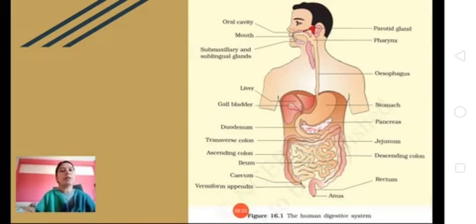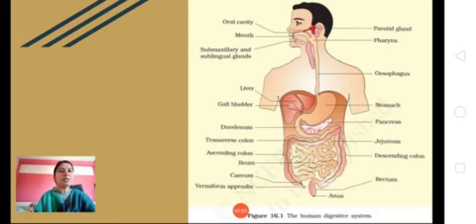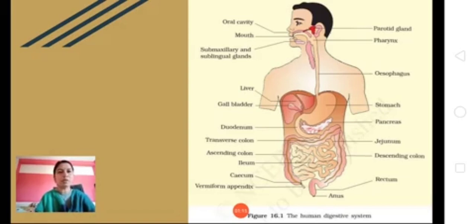The digestive system begins with the mouth. Inside the mouth there is an oral cavity, also termed as buccal cavity, and inside the buccal cavity we have the salivary glands. They are of three types which we will see later. Then we have our teeth as well as tongue. After the mouth you can see a pipe-like structure which is called the food pipe or esophagus. The esophagus then leads to a J-shaped stomach, and after the stomach you can see the small intestine, which is again divided into three parts.